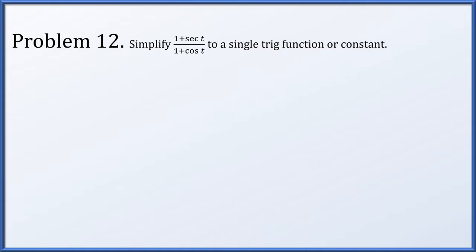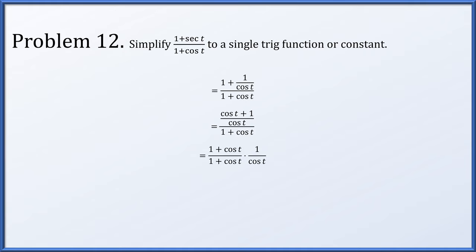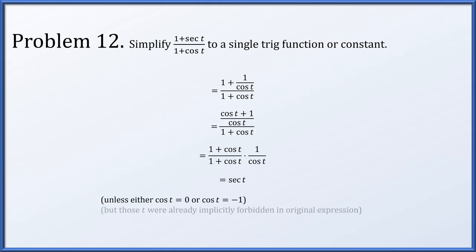For problem 12, we'll simplify (1 + sec(t)) divided by (1 + cos(t)) to a single trigonometric function or constant. I like to replace functions in terms of sines and cosines, so I replace that secant with 1/cos(t). These two terms in the numerator I give a common denominator of cos(t) and add them together, simplifying to (cos(t) + 1)/cos(t) all divided by (1 + cos(t)). We can factor (1 + cos(t)) out of both the numerator expression and the denominator, giving us (1 + cos(t))/(1 + cos(t)) times 1/cos(t). The (1 + cos(t))/(1 + cos(t)) cancels out, and 1/cos(t) is simply sec(t). In the original expression, if cos(t) were 0, secant(t) wouldn't exist, and if cosine(t) were −1, the overall denominator would be zero — so these were already implicitly forbidden.